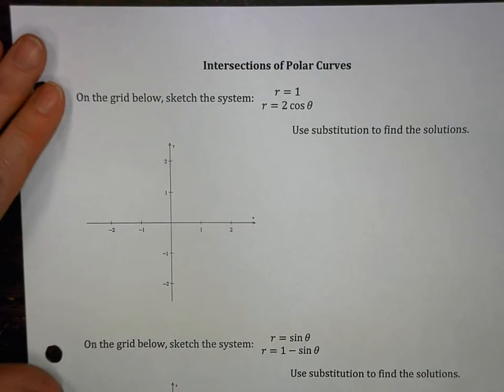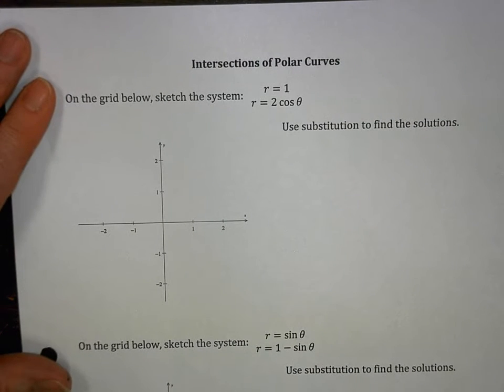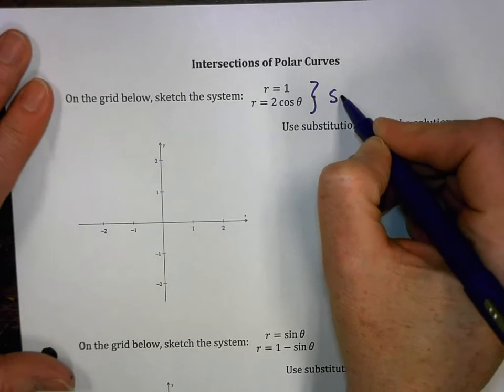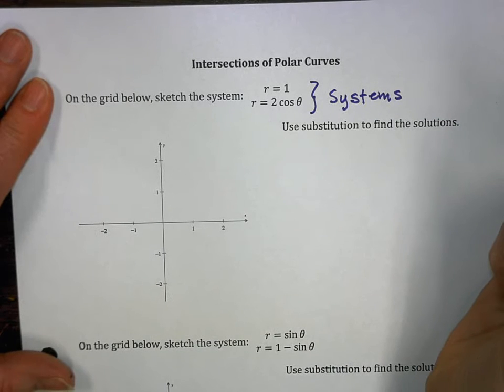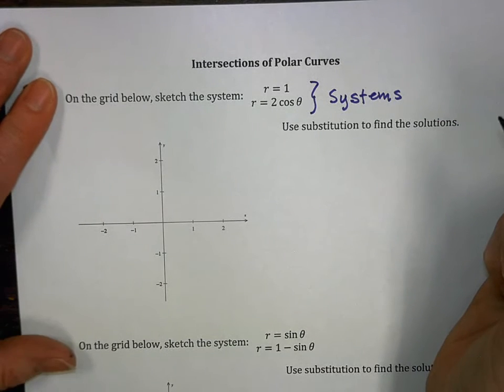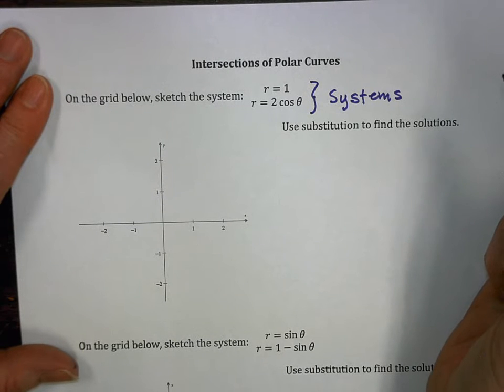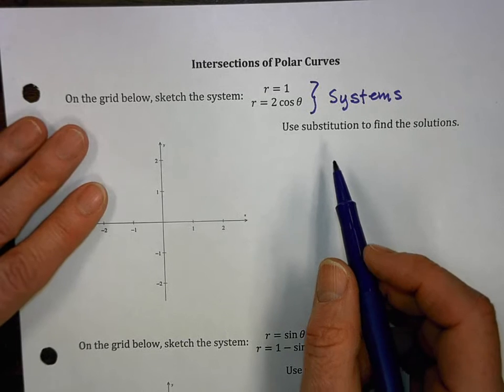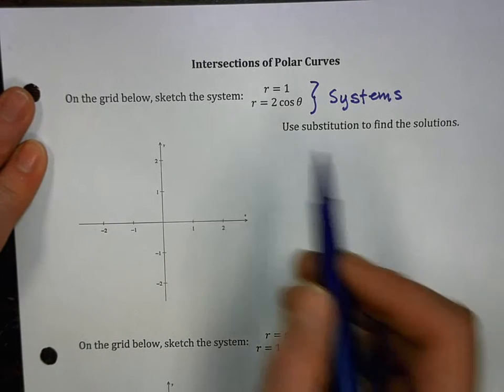Intersections of polar curves. We know we've already found solutions of systems. This is a system because there are two equations. We know how to find solutions. Sometimes there's one, two, three, there could be a lot of different number of solutions. So we've got to find them. We can always find solutions by graphing. So let's start there.